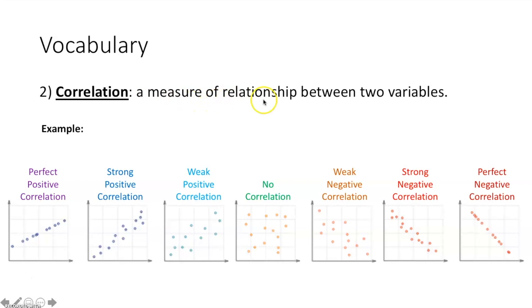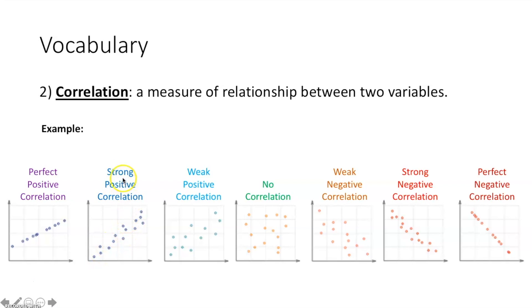Correlation — that's a measure of relationship between two variables. We have a perfect positive correlation, meaning it forms a straight line going up and to the right. A strong positive correlation means it is going up and to the right but does not form a straight line — it's pretty close though. A weak positive correlation means the data looks like it's going up and to the right, but it's scattered out and not anywhere near a line.